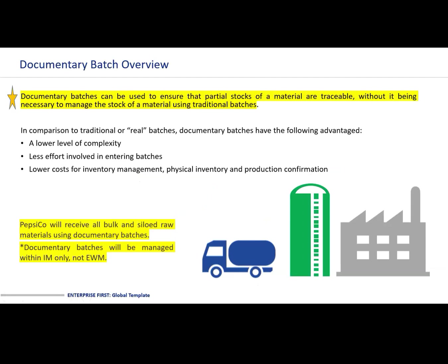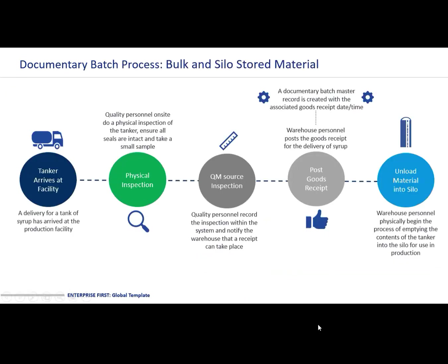Now an overview of documentary batch. Documentary batches can be used to ensure that partial stocks of a material are traceable, without it being necessary to manage the stock using traditional batches. Within PepsiCo, we will receive all bulk and silo raw materials using documentary batches. Documentary batches will be managed within IM only, not EWM. The process flow: a tanker of corn, for example, will arrive at site. There'll be a physical inspection, a quality inspection, and then the goods will be goods received. Once these four steps have been completed, it is only at this point when the material will be unloaded.